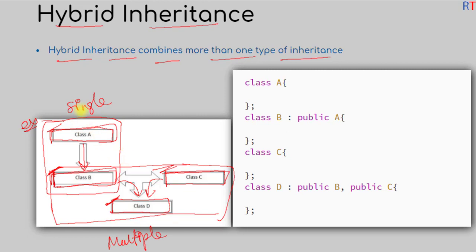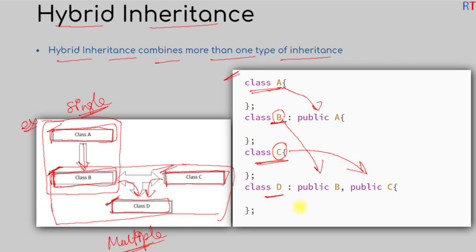So this example of hybrid inheritance is combined with one single inheritance and one multiple inheritance. The syntax is: first we have class A, which is inherited by class B, then we have another class C, and class D inherits properties of both class B and class C. Class B inheriting class A is single inheritance, and class D inheriting both B and C is multiple inheritance.